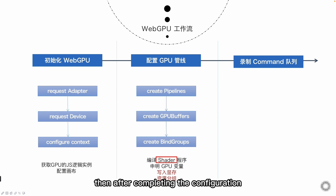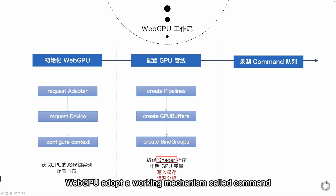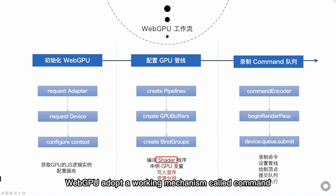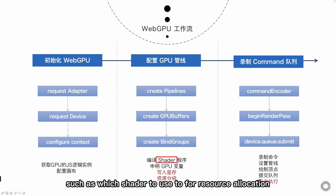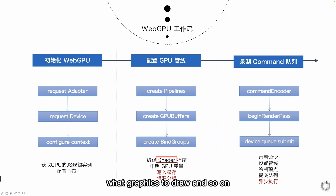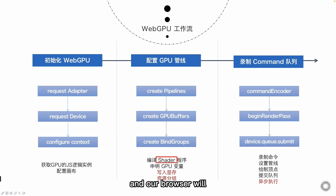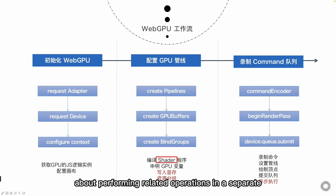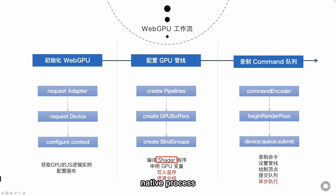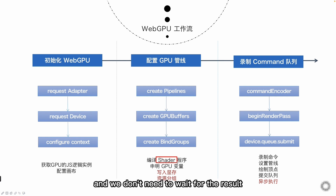After completing the configuration, we can start the real calculation and drawing work. We introduced that WebGPU adopts a working mechanism called Command Encoder. That allows us to store some operations in JavaScript, such as which shader to use, resource allocation, what graphics to draw, and so on. Then after the drawing is completed, we will submit the command queue, and our browser will follow the order of the queue internally — performing related operations in a separate native process. For the JavaScript process, this is an asynchronous submission and we don't need to wait for the result. This is a basic WebGPU workflow.